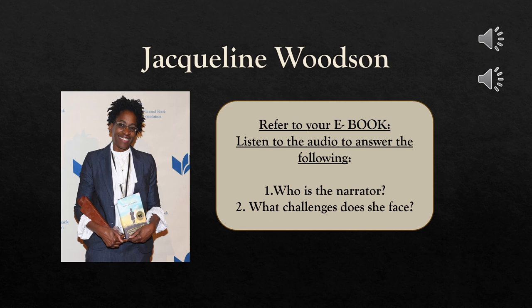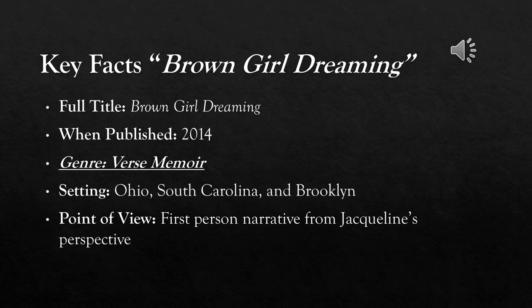Now we're going to link Woodson's work with the historical background of that time. 'Brown Girl Dreaming' takes place in the 60s and early 70s during the Civil Rights and Black Power movements. Both were social movements that aimed to achieve equal rights for African Americans. The Civil Rights movement, led by Dr. Martin Luther King, focused on nonviolent protest as a means of ending racial segregation and discrimination.